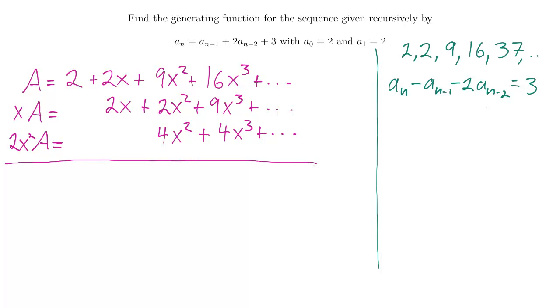Alright. And now, let's combine these. I'm taking the first one, minus the one before that, minus two of them, so I'm just going to subtract each of these line by line. On this side, I will have 1 minus x minus 2x squared, that whole thing, times A. That'll be equal to, let's see what we get on this side. 2 minus 0 minus 0 is 2.